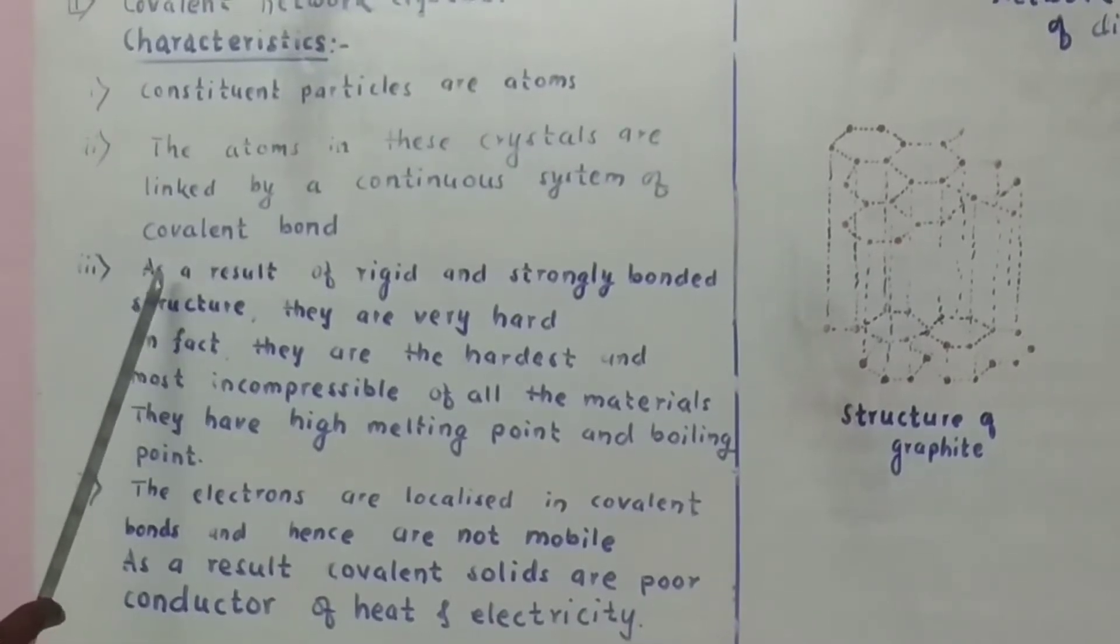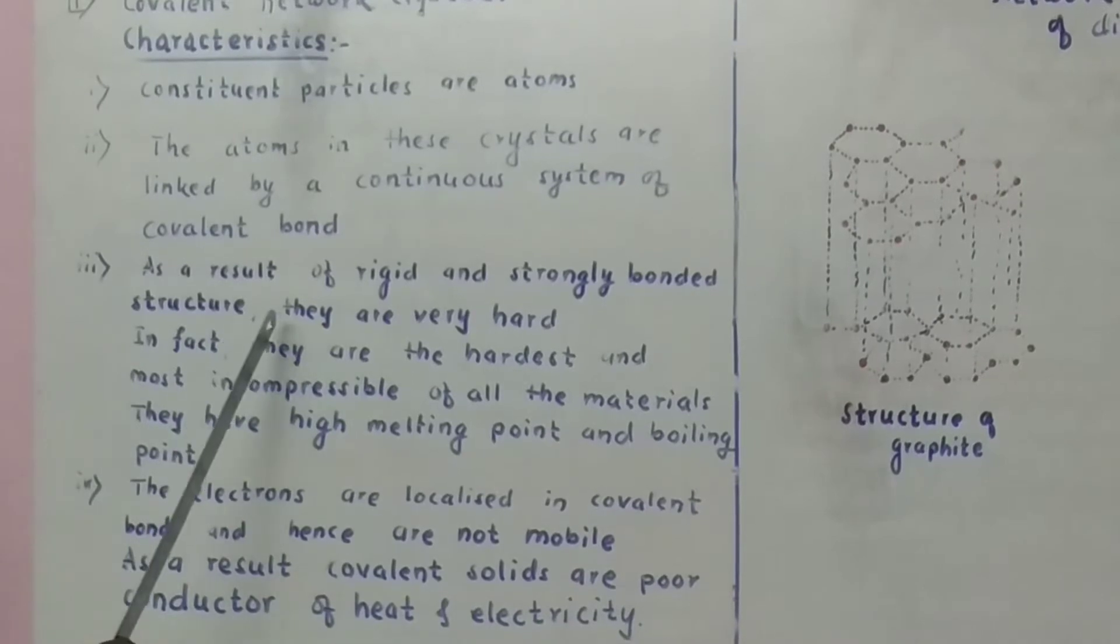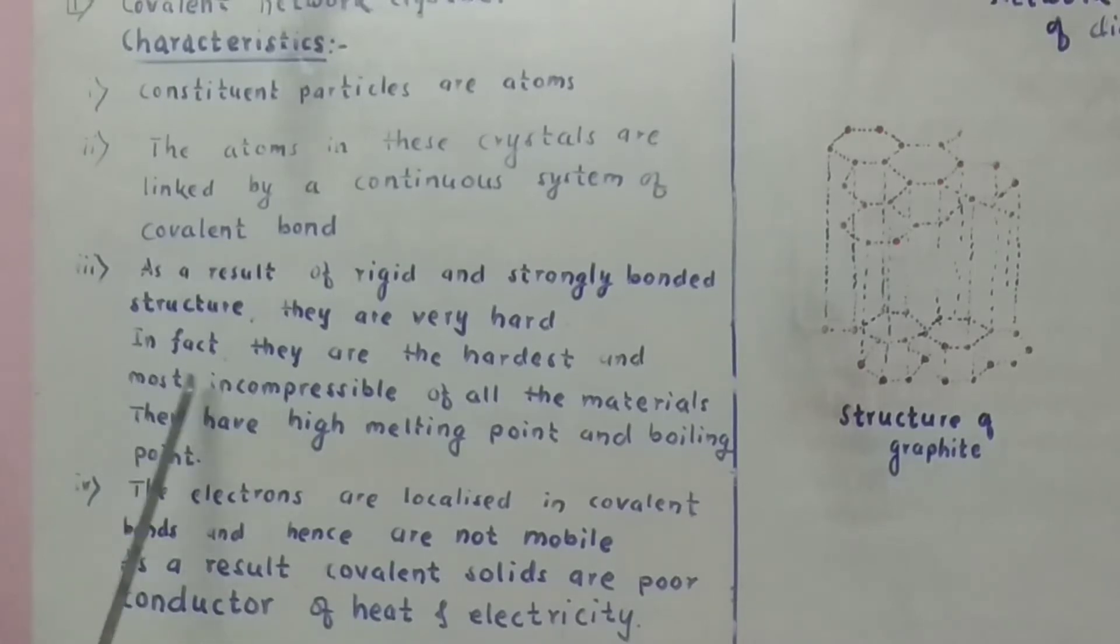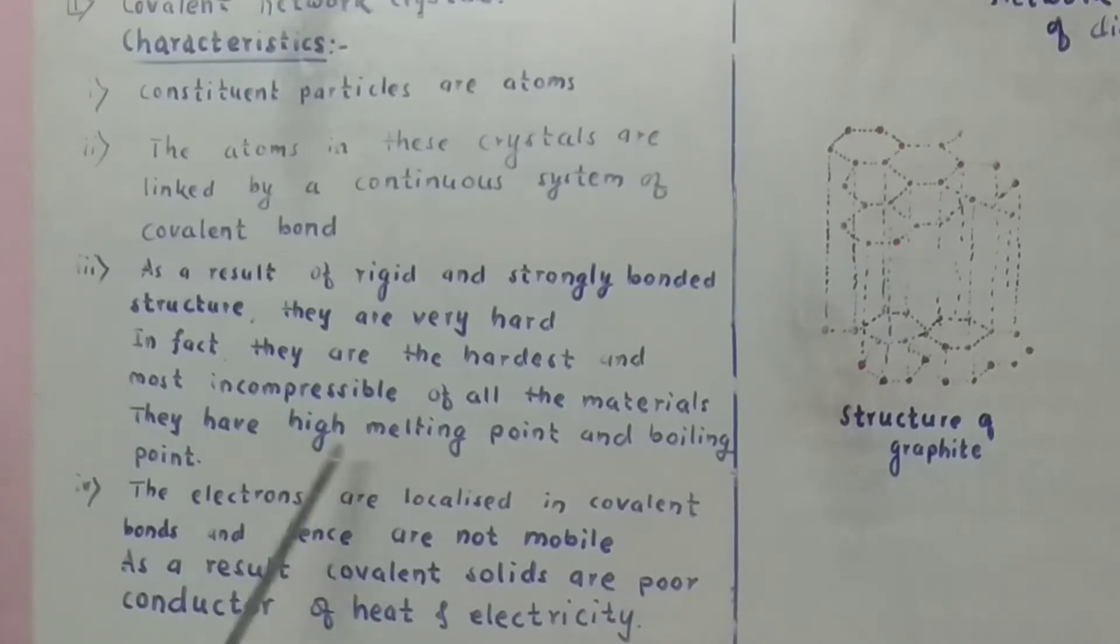As a result of rigid and strongly bonded structures, they are very hard. In fact, they are the hardest and most incompressible of all the materials. They have high melting point and boiling points.